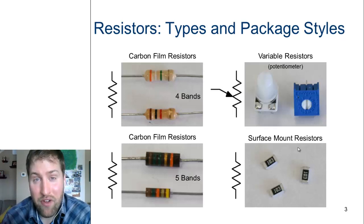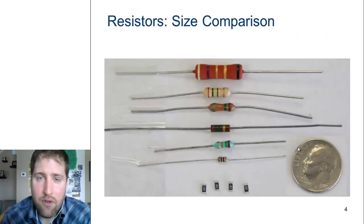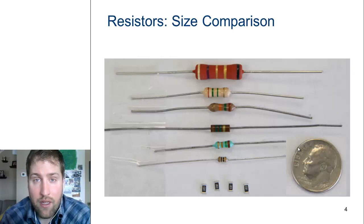Top right you'll see different types of resistors that can actually vary the resistance with the turning of a knob, and bottom right you'll see surface mount resistors. All these have the exact same functionality - their whole job is to resist or decrease the amount of current flowing in an electrical system.